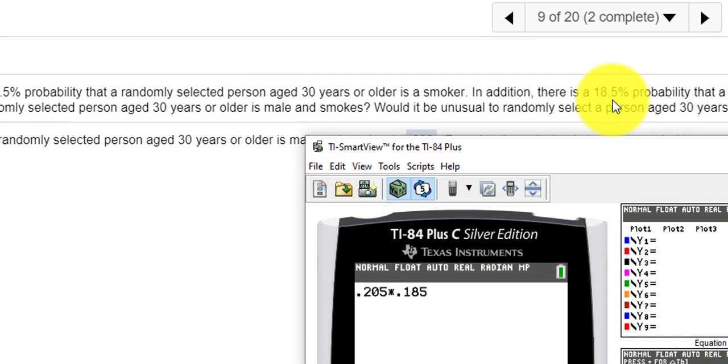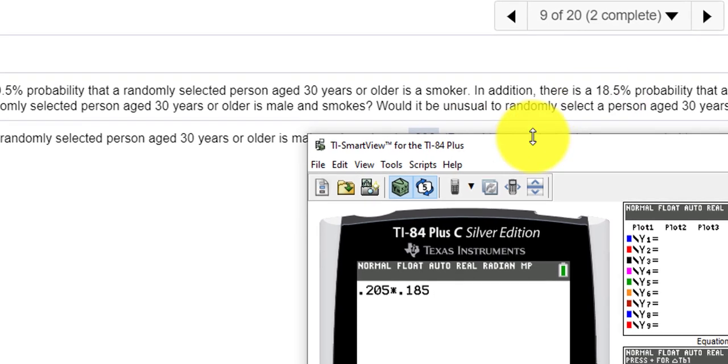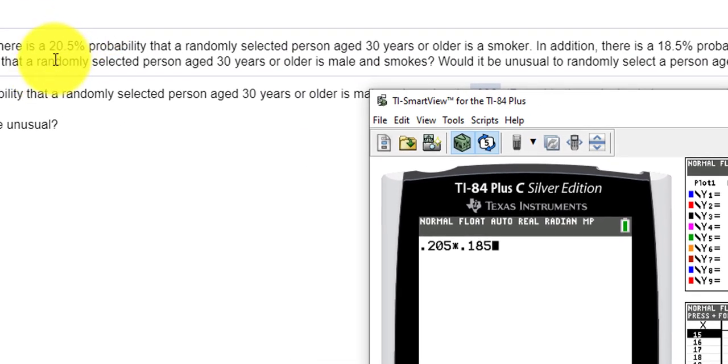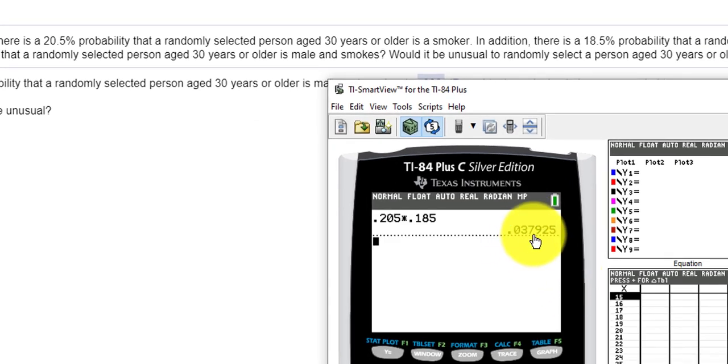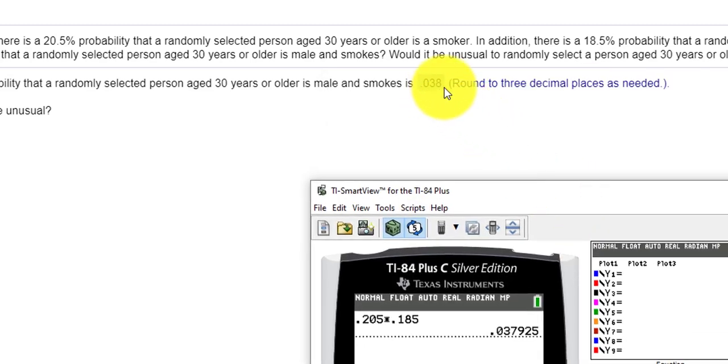So I'm going to move the decimal two places, once, twice, just like we did here, once, twice. And we press enter, and you get 0.038 when we round, 0.038.